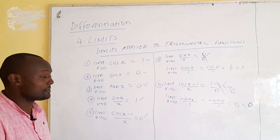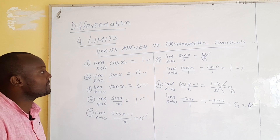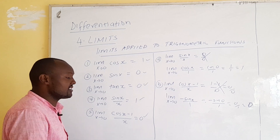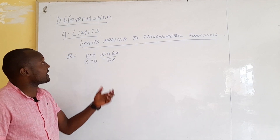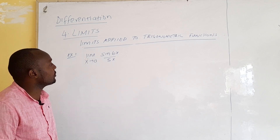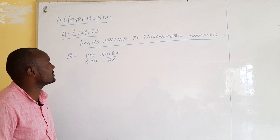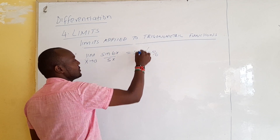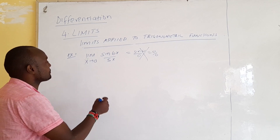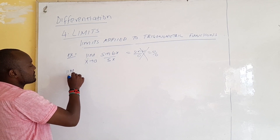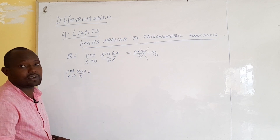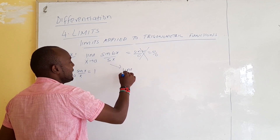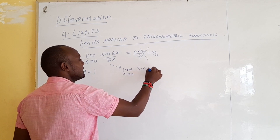Now we can solve Example 1, applying these identities to trigonometric limits. We are given the limit as x approaches 0 of sin(6x)/(5x). By direct substitution we get sin(0)/0 = 0/0, so we cannot solve directly. But we know that the limit as x approaches 0 of sin(x)/x equals 1.